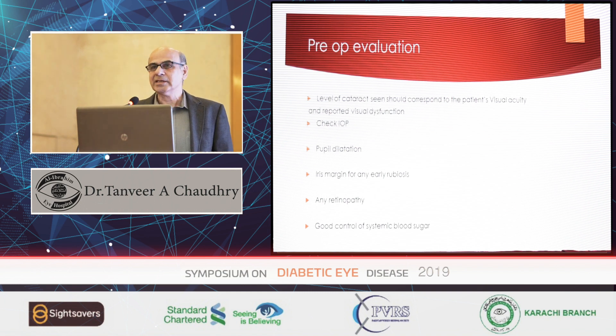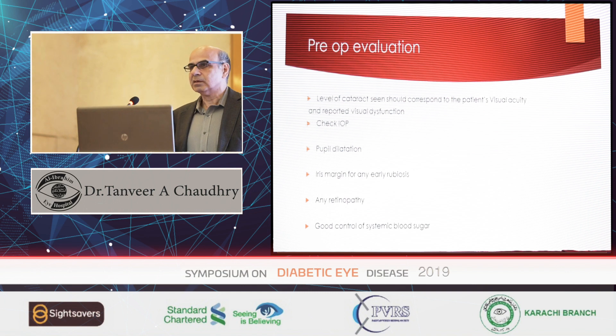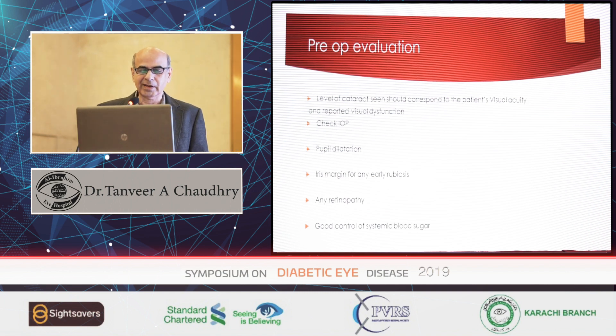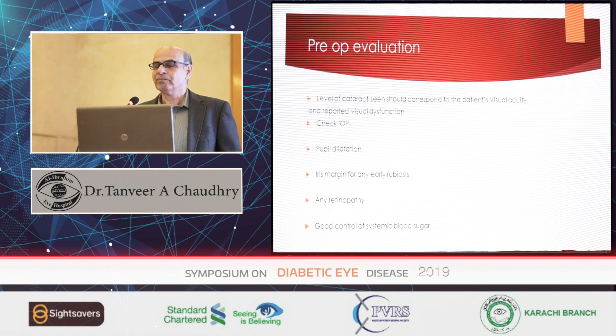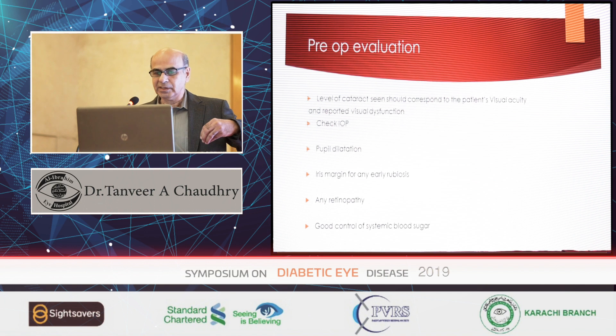Pupil dilatation — the pupil does not dilate. This is very common in diabetic patients. People don't dilate well. And we just keep putting drops in — I've seen this in many hospitals: the pupil is not dilating and staff keep adding more drops.